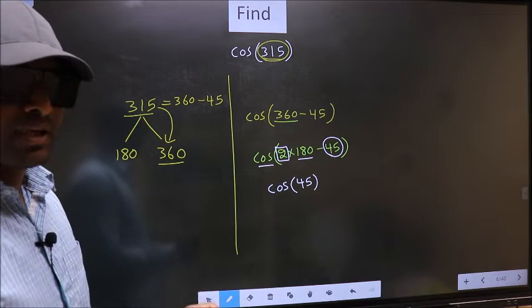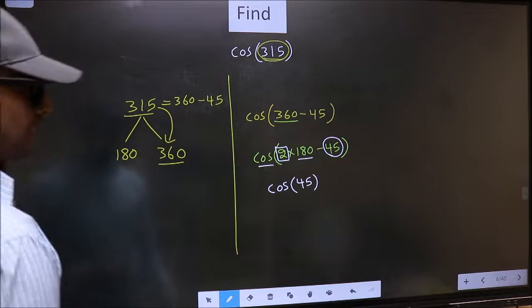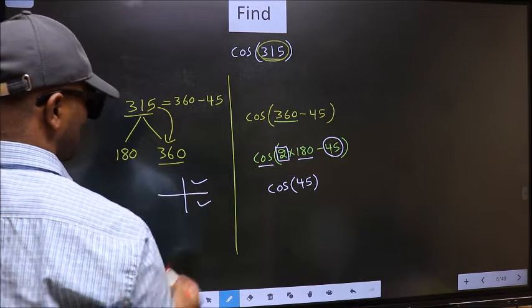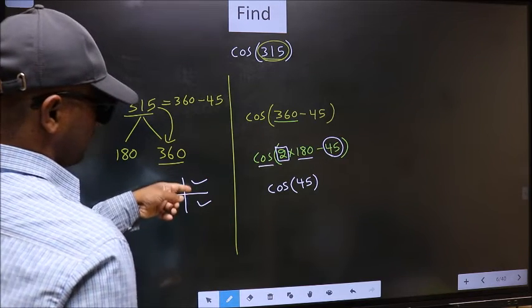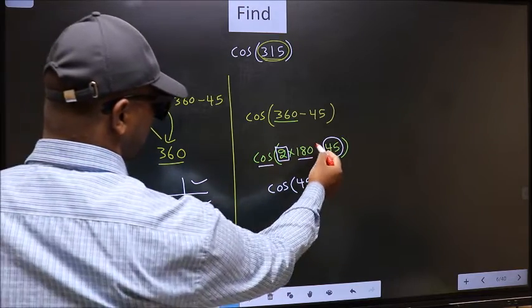All the even multiples of 180 lie in either the first or the fourth quadrant. So now to select the quadrant, we should look at this symbol.